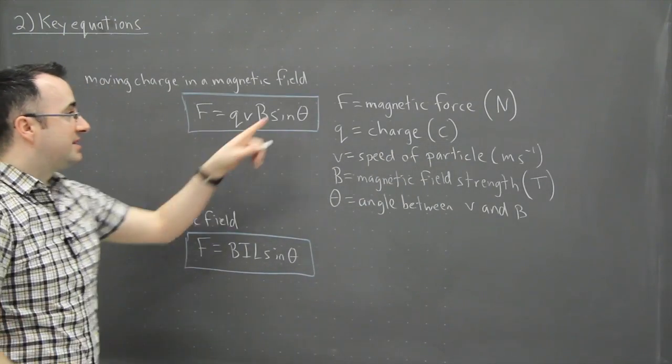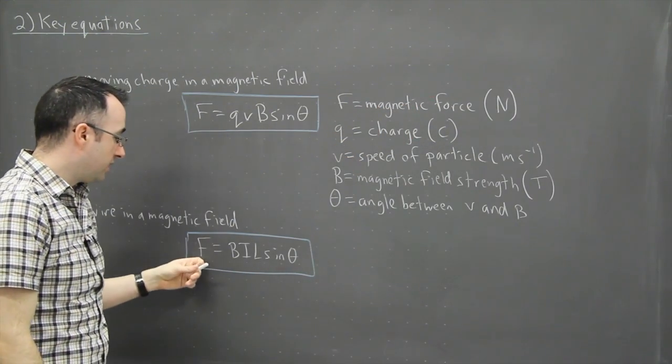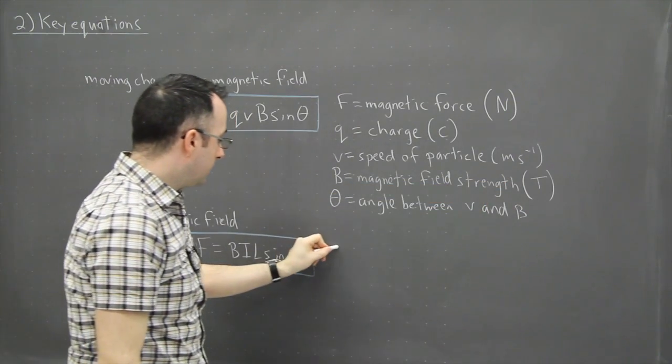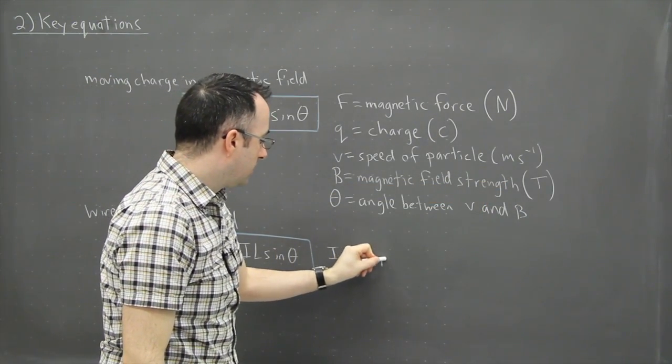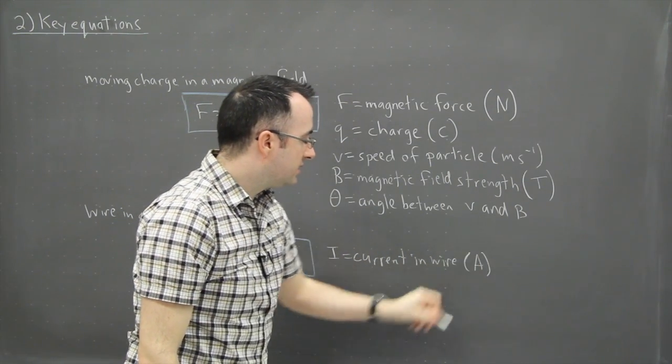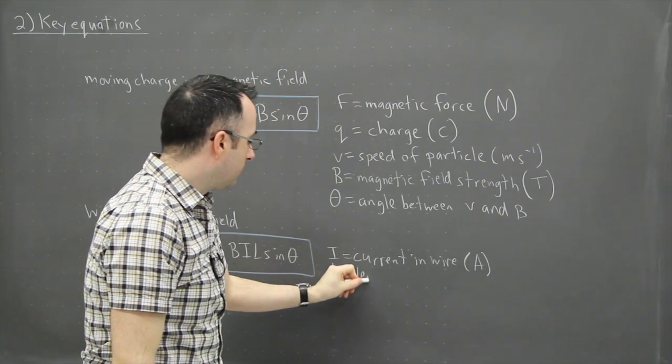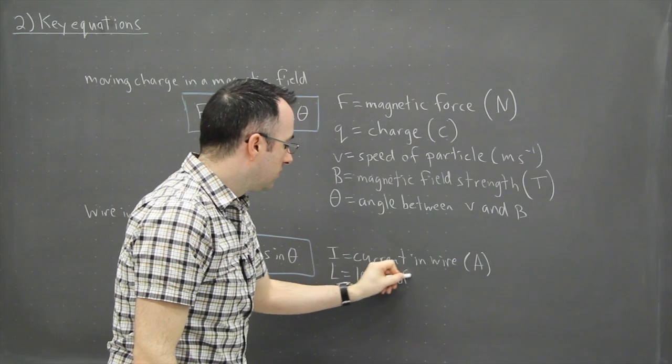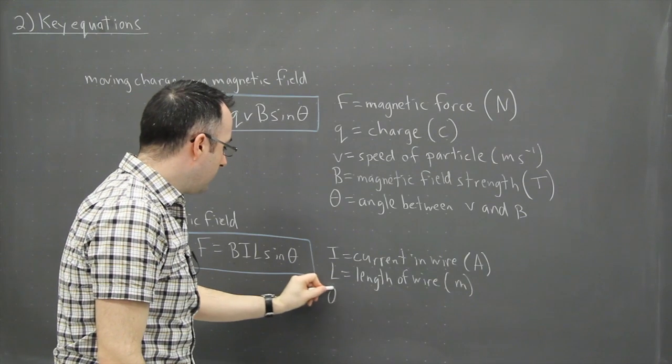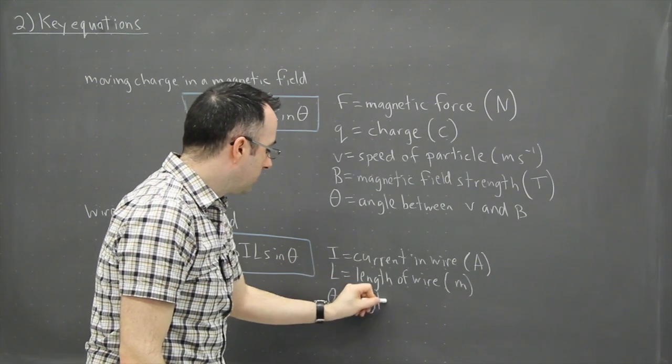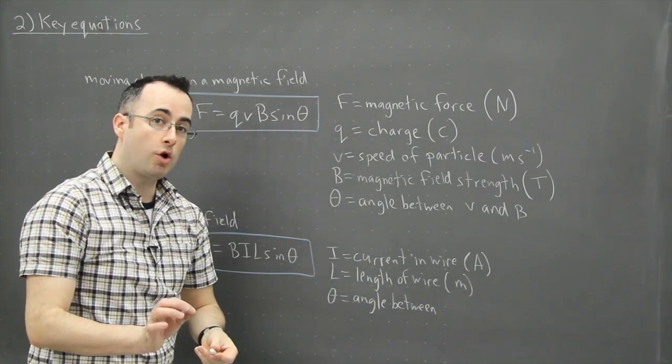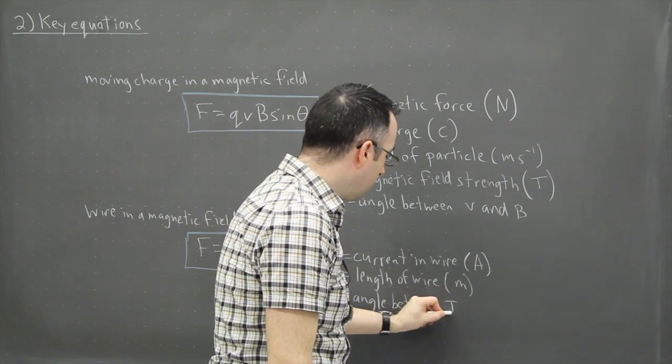So this F is the same. It's still the magnetic force in Newtons. B is still the magnetic field strength in Teslas. Now I, just to make sure we're clear here, that is the current in the wire, and that's measured as always in amperes. L is the length of the wire. So it depends how long the wire is. The length of the wire is going to be measured in meters. And this angle then, theta, is going to be the angle between the current and the magnetic field strength. So between I and B.